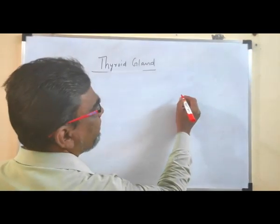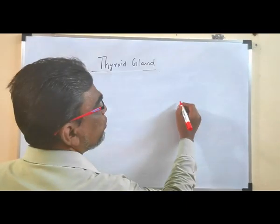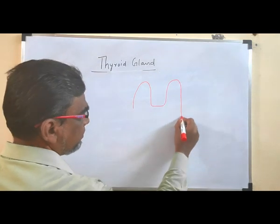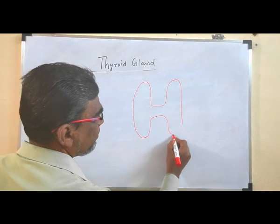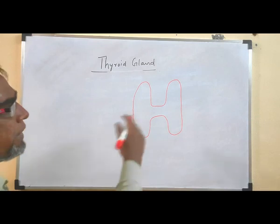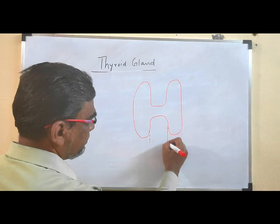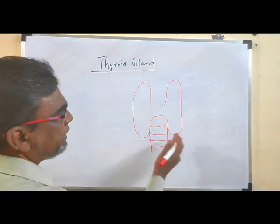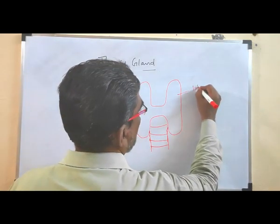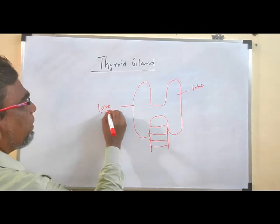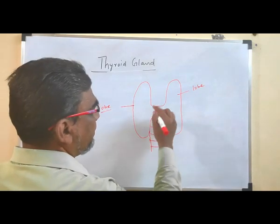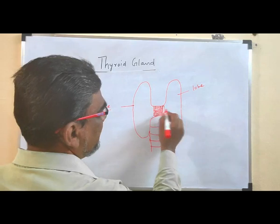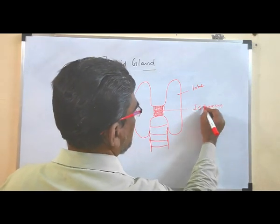I will draw the diagram of the thyroid gland in a simple way. There are two lobes, like this, on either side of the trachea. These two lobes are called lobes of the thyroid — one lobe here and one lobe there — so it is called a bilobed gland. These two lobes are connected by a median tissue called the isthmus.